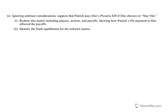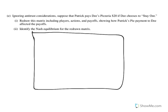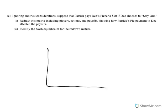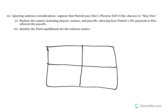Finally, part E. This part has generated some debate with my students about what the right answer is. Let me read it: ignoring antitrust considerations, suppose Patrick pays Dee's pizzeria $20 if Dee chooses to stay out. We need to redraw the matrix updating this information. The two boxes in the enter column don't change: $50 and negative $2, then $150 and $15. But the question is what to do with the two boxes in the stay-out column.